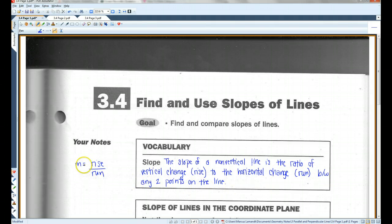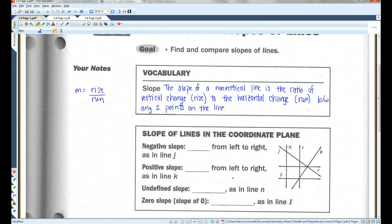More commonly, you hopefully remember that slope is usually denoted by the letter M, and M equals rise over run. Hopefully you also remember that if you have a vertical line, there is no slope, or an undefined slope.